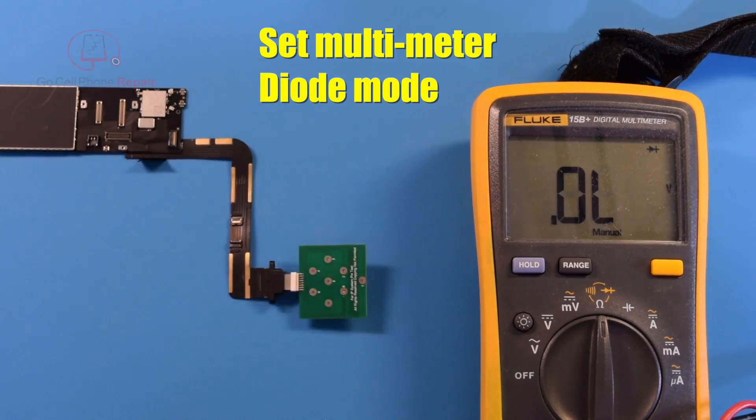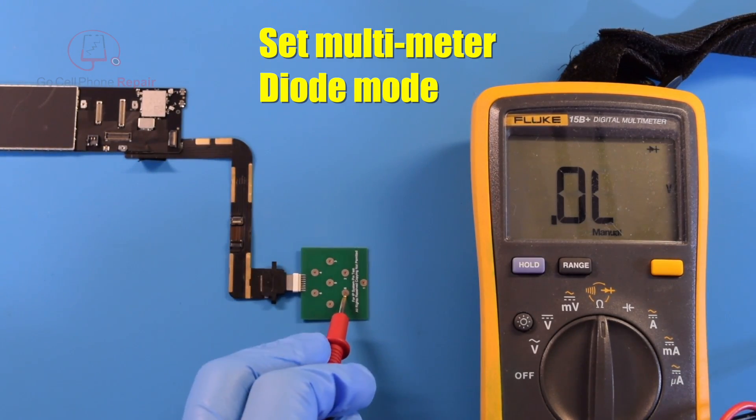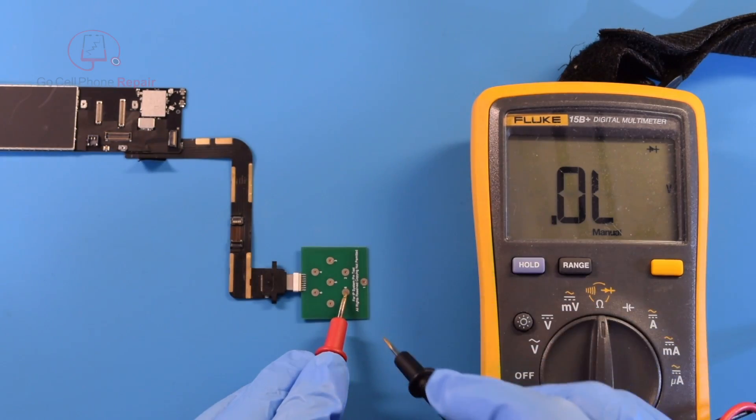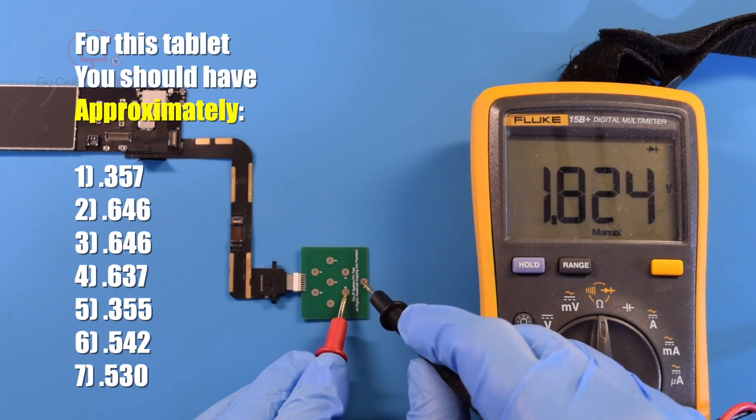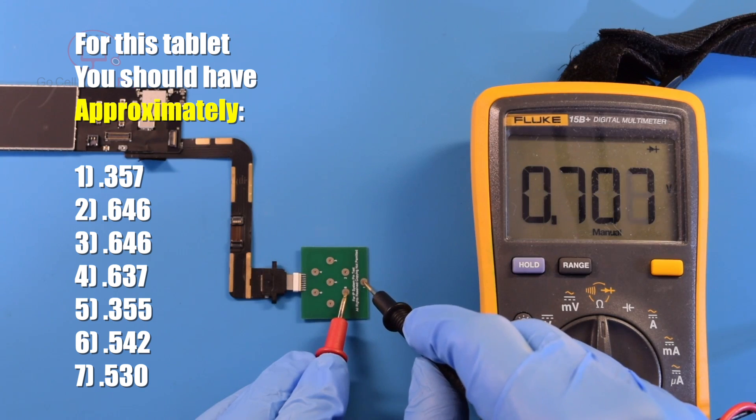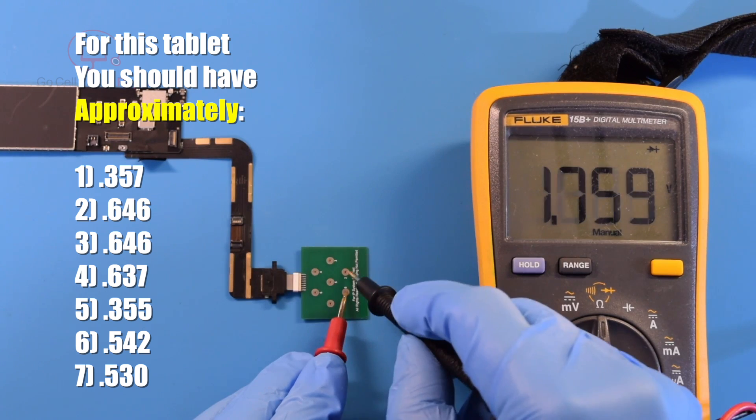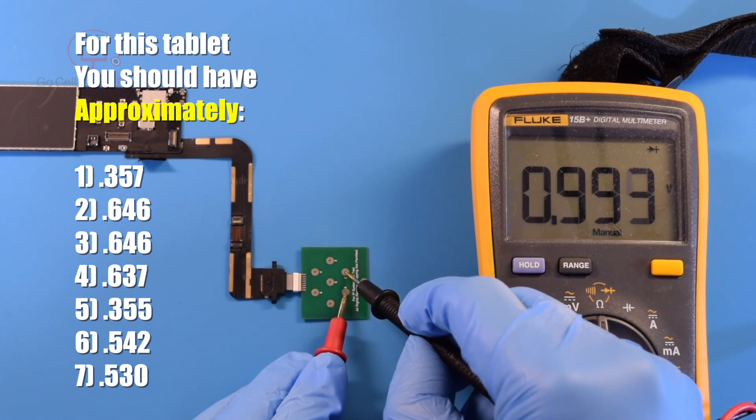So we'll take this, and if we put the red probe on number eight right here, this is our ground. You could also put it over here on the Wi-Fi IC if you wanted to. But we should have a number everywhere except for occasionally on number four. Sometimes this is going to be OL. You can see on number one, we've got 72,830 rising actually, which is kind of different because I think this is supposed to be lower than that.